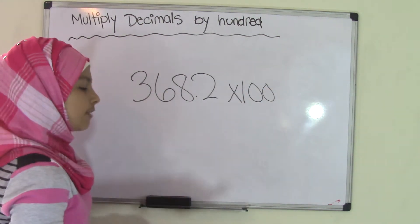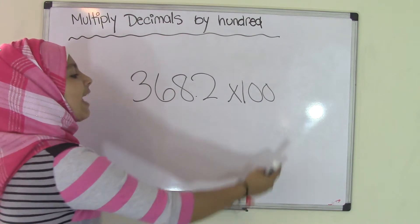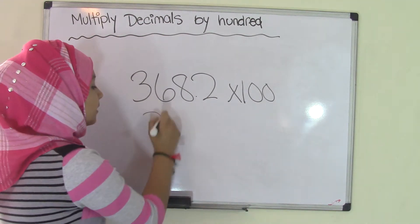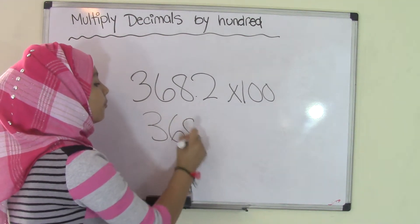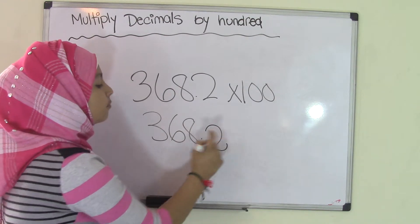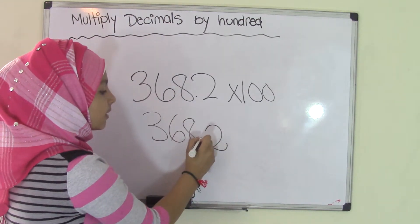Once again we could write this in horizontal form and do that, but we're just going to use the easy way or the quick way. And 100 has two zeros, so we're going to write this number over: 368.2, and move the decimal point two times.